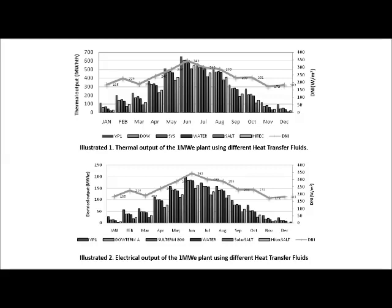From a first look at Figures 1 and 2, we can see that the thermal and electric production of the simulated plant can be considered high for all the working fluids, especially during the period from April to October. The maximum values were observed during June, where the thermal and electric outputs vary between 500–650 thermal megawatts and 150–200 electric megawatts, respectively.